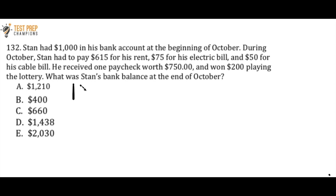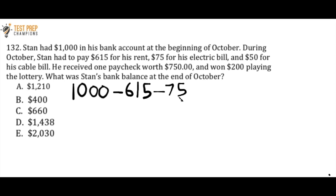At the beginning of October Stan has $1,000 in his bank account. He has to pay $715 for his rent — when he's spending money we're going to subtract. Then he has to pay $75 for his electric bill and $50 for his cable bill, so we subtract those as well. He received one paycheck worth $750, so I'm going to put plus $750. And then he won $200 playing the lottery, so since he's gaining money I'm going to put a plus.